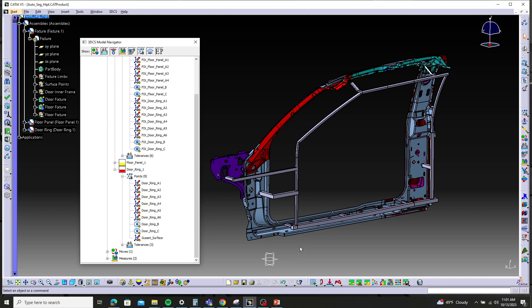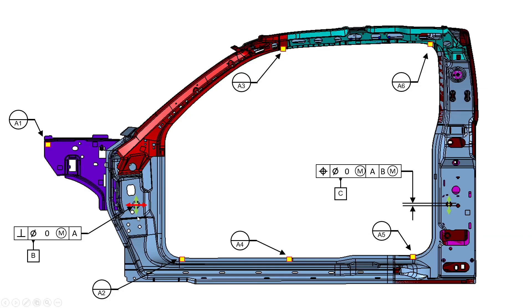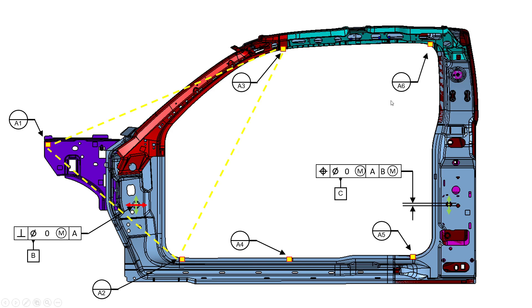That can be accomplished with the segment bend move, and we're going to walk ourselves through it. Here's a drawing mock-up of the door ring assembly. You can see we have six A datums, as well as datum B and C. We are going to pick the first three primary plane points, just like you would for an auto bend move or any six-point step plane move, as well as datum B and C. Then we are going to designate the bend points and bend lines to bend to A4, A5, and A6.